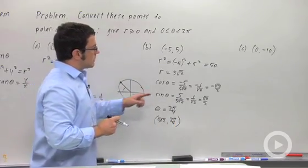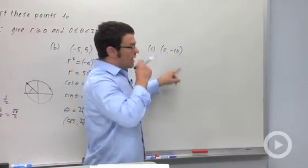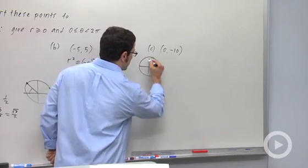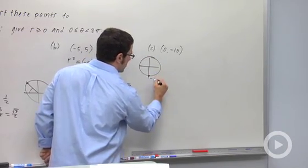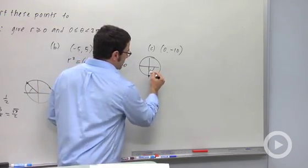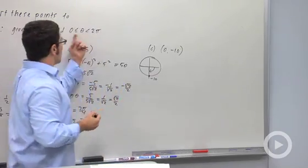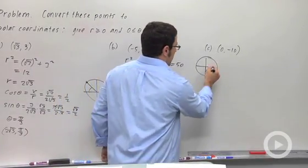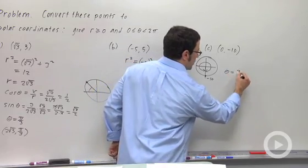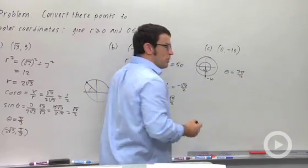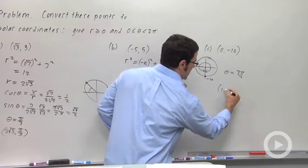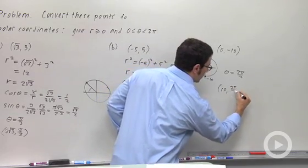And finally, let's do (0, -10). Actually this one's pretty easy. If you graph this point, you can kind of see that we can't really use an angle of -π/2 because it's not in the interval we want. But you can use an angle of 3π/2. So theta would be 3π/2. And remember that r is just the distance from the origin, which is 10. So this would be 10, 3π/2.